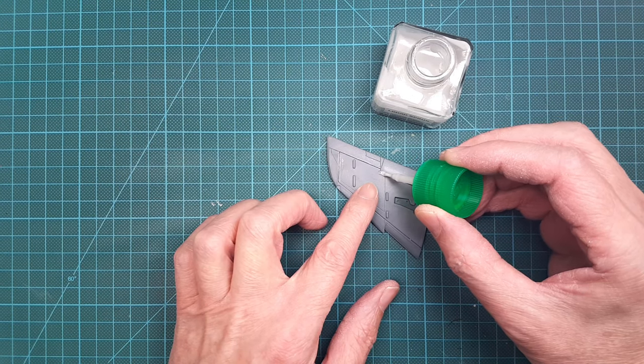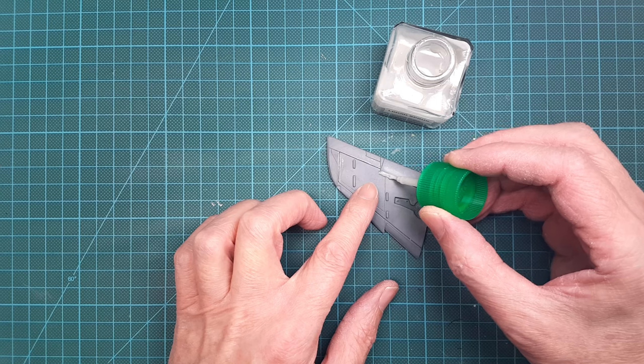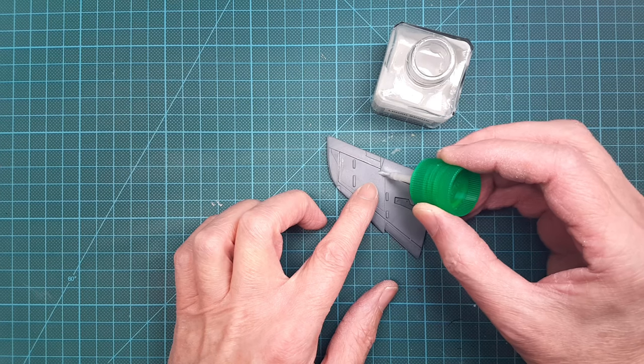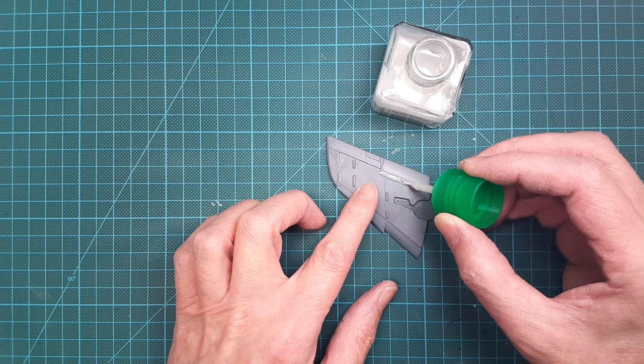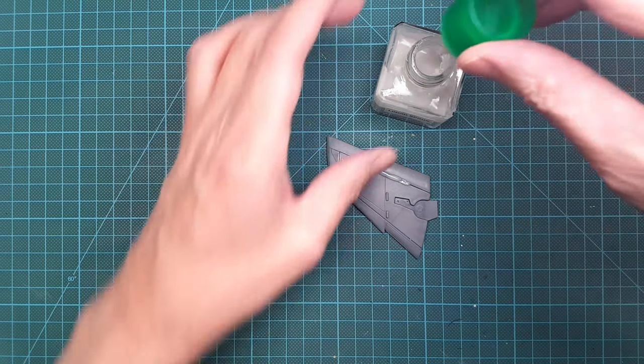I dab on the liquid sprue trying to work it into the seams a bit and build up some material on top of the seam. The liquid sprue will shrink a little bit while it's curing, but after it's dry it will not shrink any more.